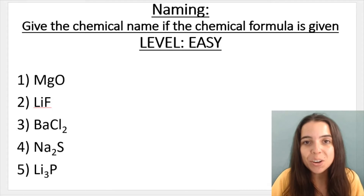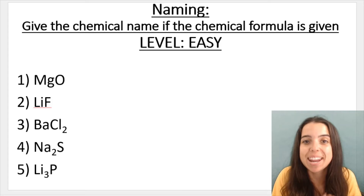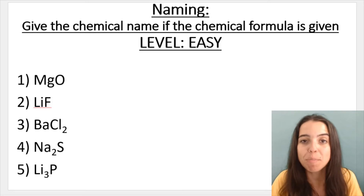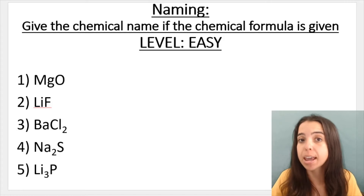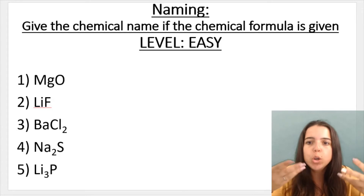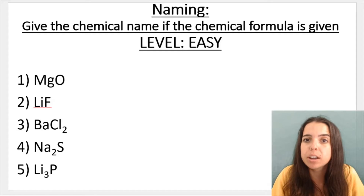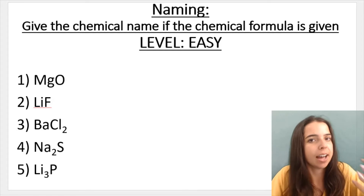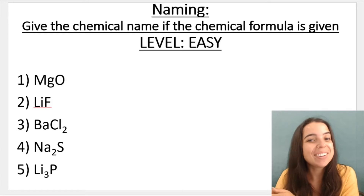Hello! In this video, I'm going to go over a few examples of how to name chemical compounds. In this particular video, I'm going to be focusing on giving the chemical name — the spelled-out name — so for example, sodium chloride, if they give you the chemical formula, so for example, if they give you NaCl. Over here, you can see I have a list of chemical formulae.